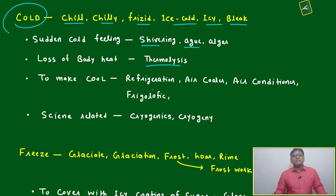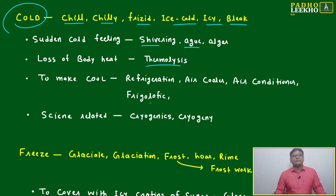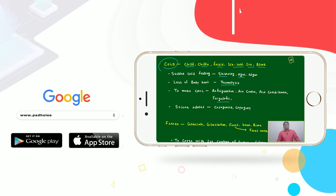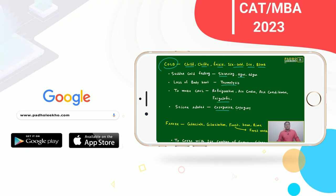To make things cool, what are the machines we use? Refrigeration, air cooler, air conditioner. After that, frigorific — this is a process. Then the science related to this is cryogenics or cryogeny. Anywhere words are coming with 'cryo', it will be almost related to cold.